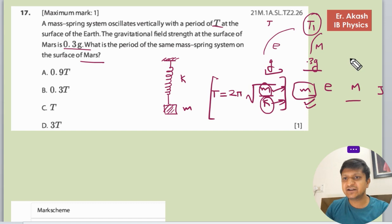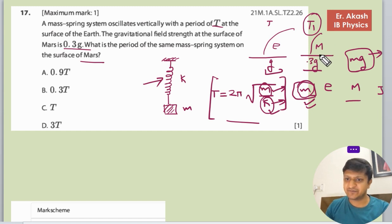And k also remains same because k depends on the make of the spring. So according to this formula there will be no change whether you are on which planet. So in these options T will be the right option. So C will be the right option, T is the right answer.